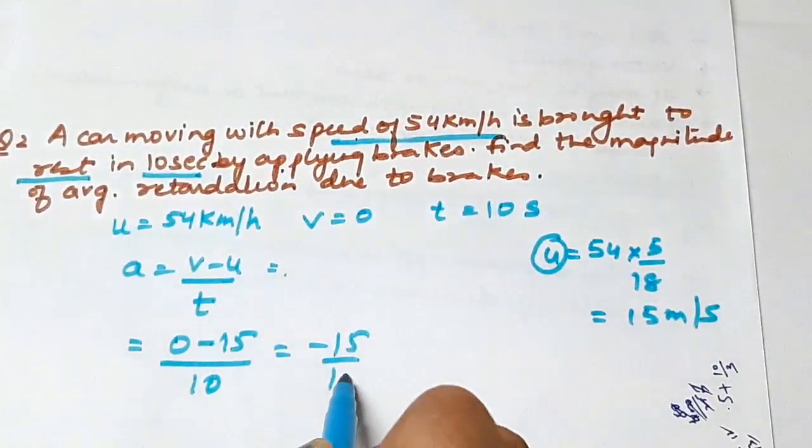For example, when a person applies brake on a moving car, its velocity decreases with time. So let's take a few numericals to understand acceleration and retardation better.